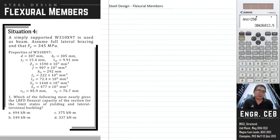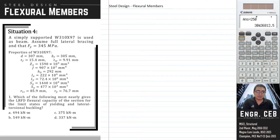Situation 4: A simply supported W310×97 is used as a beam. Assume full lateral bracing and that Fy equals 345 MPa. Which of the following most nearly gives the LRFD structural capacity of the section for the limit states of yielding and lateral torsional buckling?